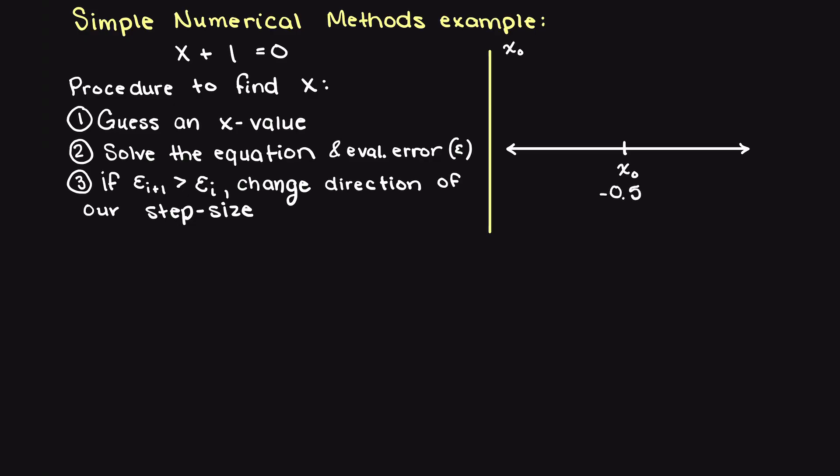This is a very simple numerical approximation algorithm. Let's begin with a guess of minus 0.5 and evaluate how close we are to our exact answer. Well, as we can see, we are off by 0.5.